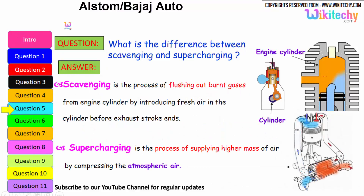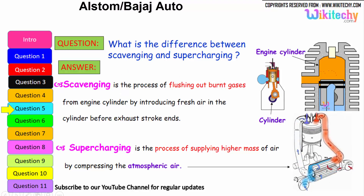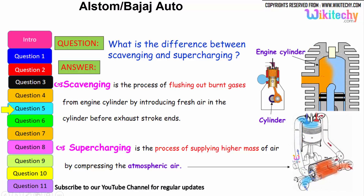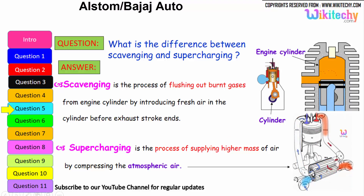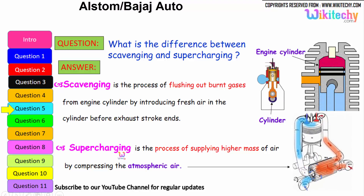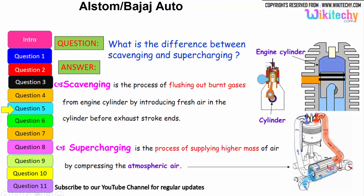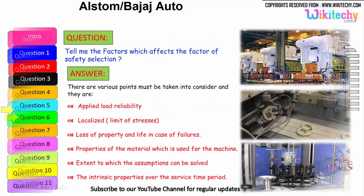Let us move on to the next question: what is the difference between scavenging and supercharging? Scavenging is the process of flushing out the burnt gases from the engine cylinder by introducing fresh air into the cylinder before the exhaust stroke ends. Supercharging is the process of supplying a high pressure of air by compressing atmospheric air — a high pressure of air is injected into the cylinder to compress the atmospheric air.